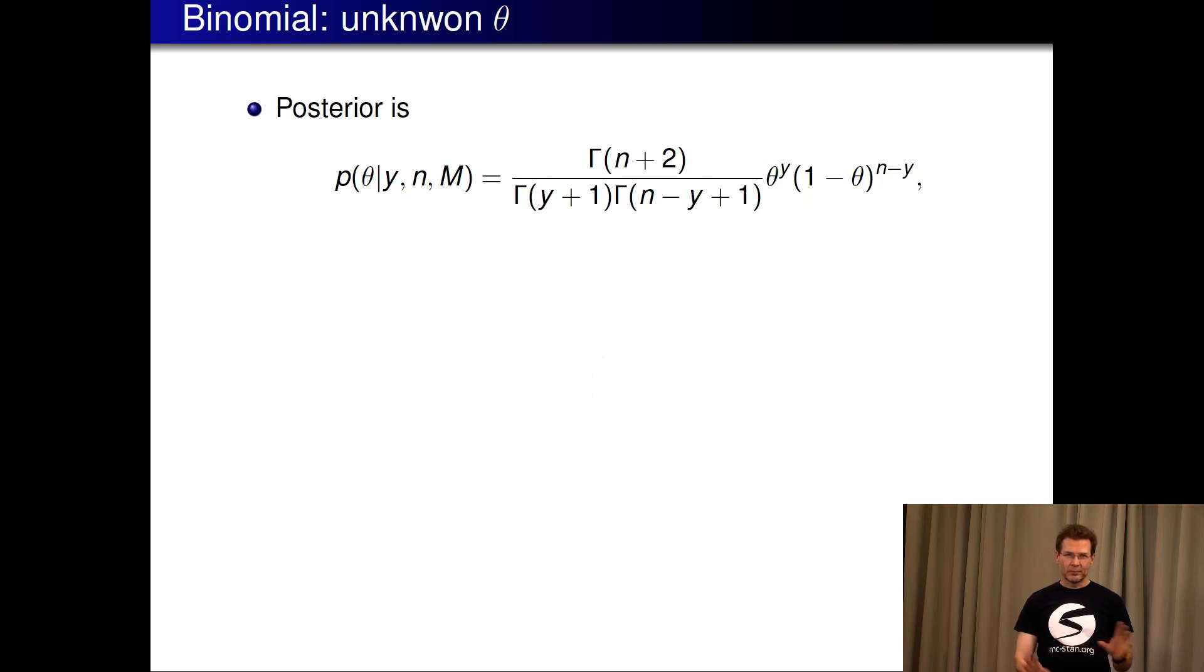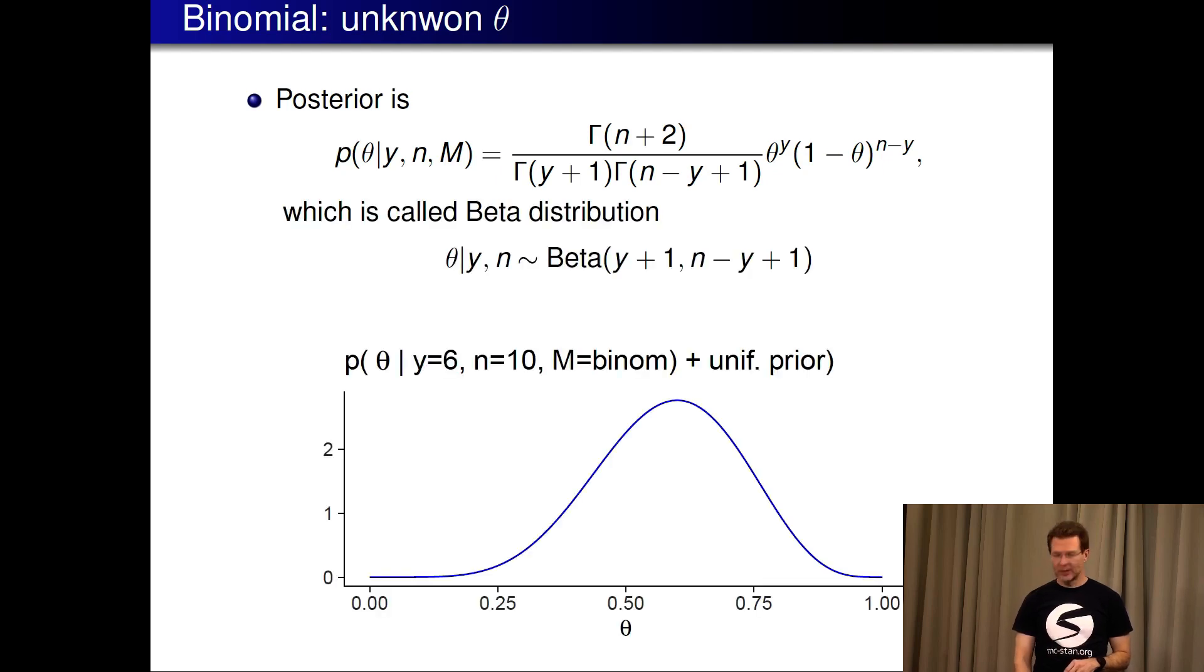So we have now this posterior distribution. Here's an example how it can look like. This is called beta distribution. In this case we have picked six red chips in 10 trials. The model is the binomial model. We're using uniform prior. And for different theta values we get how likely that theta is.